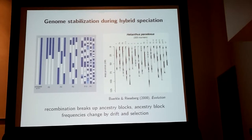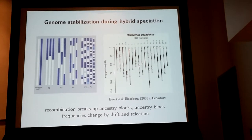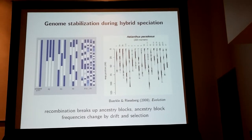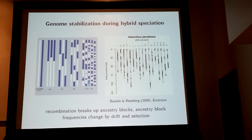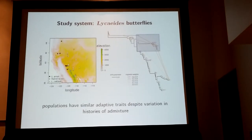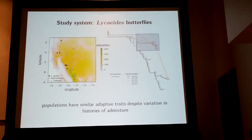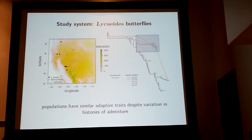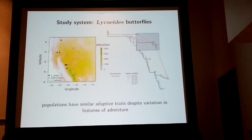In cases of repeated or replicated hybrid speciation, you can look across different outcomes of hybrid speciation to ask quantitatively how repeatable that output is. That's what I want to think about in my study butterflies. There's a series of admixed populations that occur in the alpine habitat along the spine of the Sierra Nevada and White Mountain range in western North America, shown with the gray dots there.